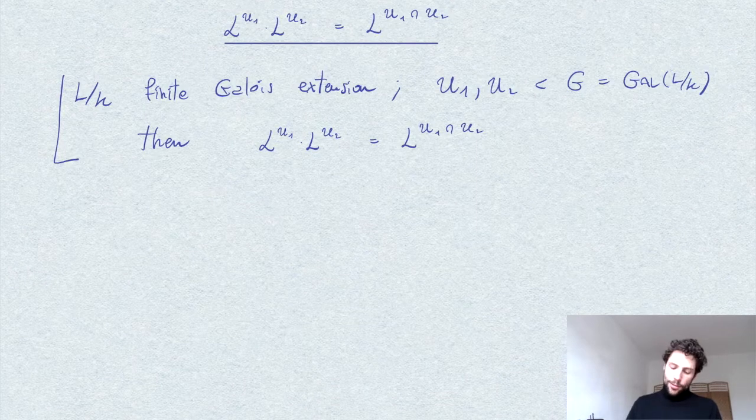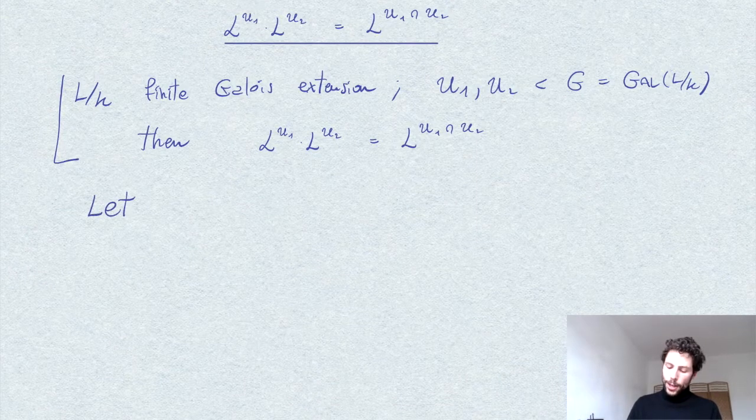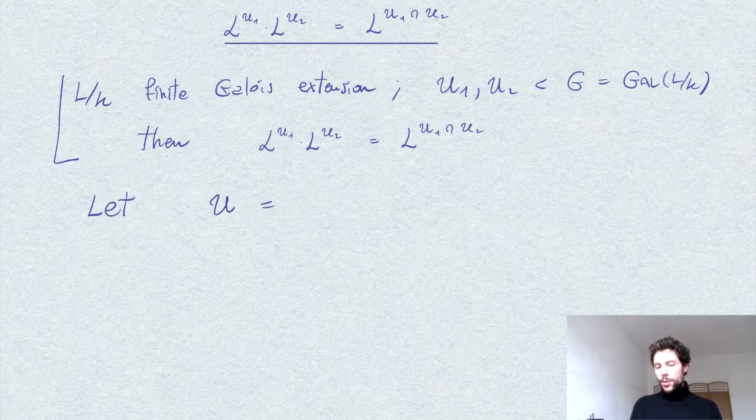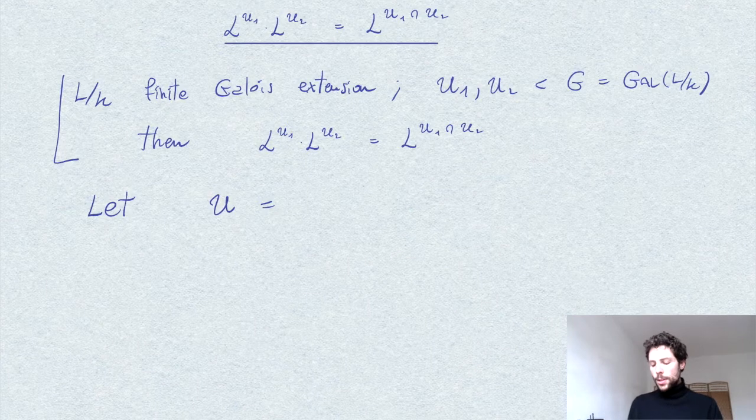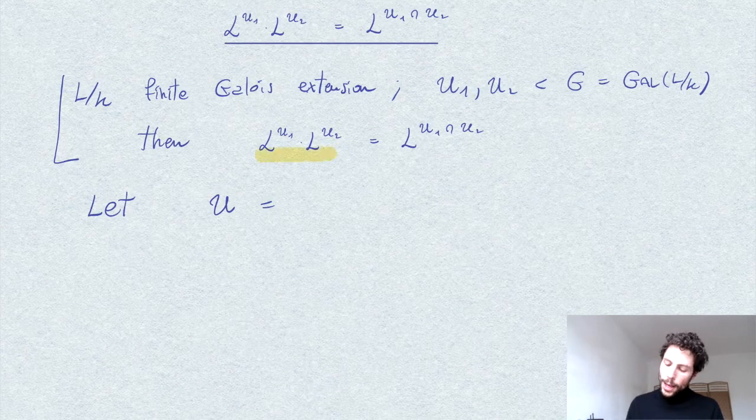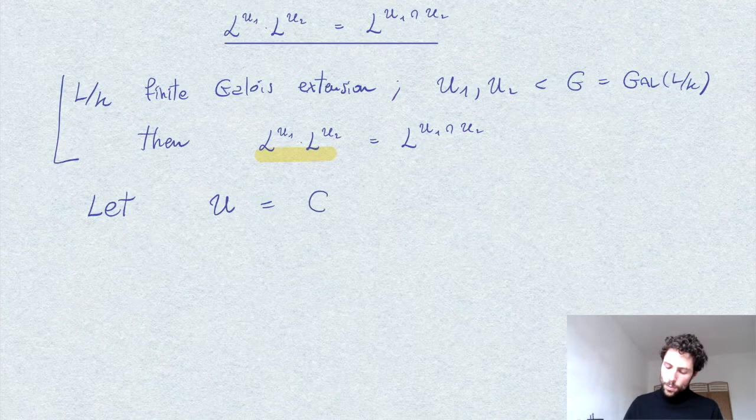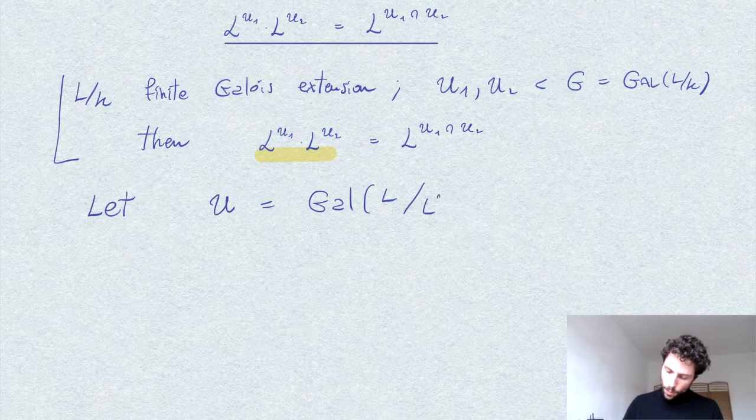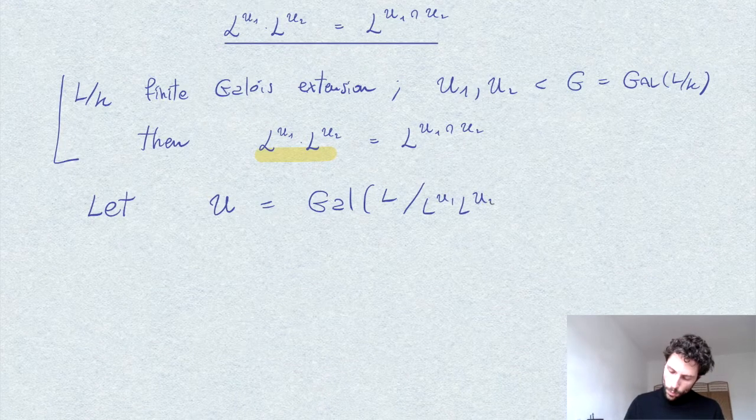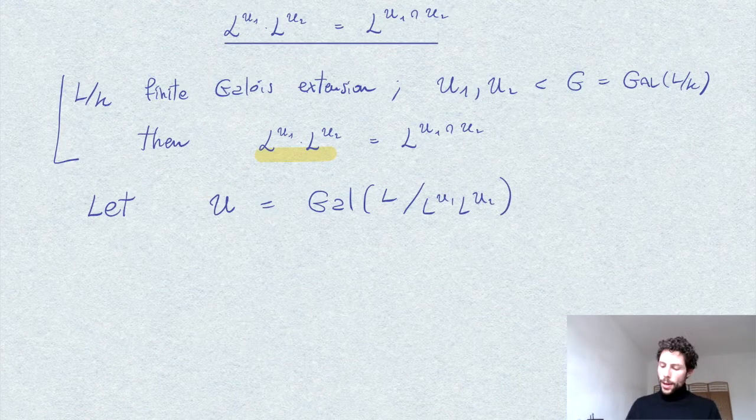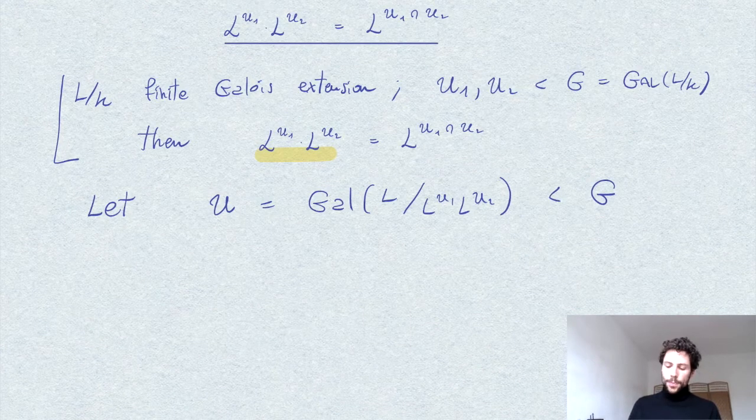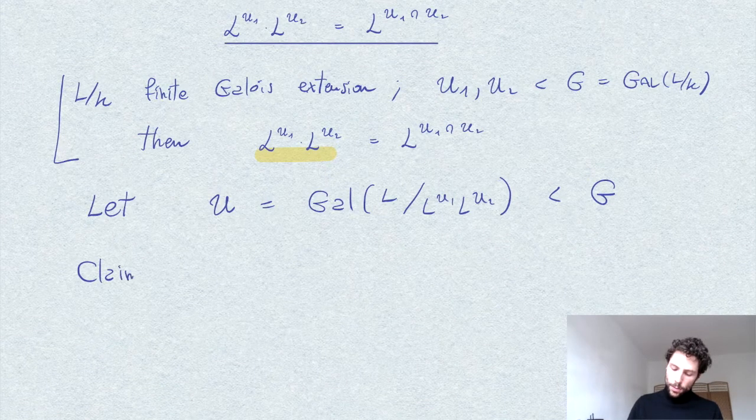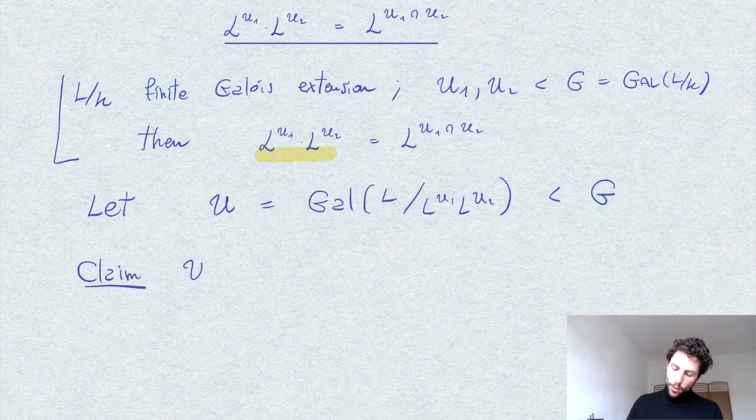Let's define, the strategy is very simple. We define the subgroup U which is the Galois group of automorphisms fixing the product, so the guy here on the left. This is obviously a subgroup of G, and we claim that this is precisely given by the intersection of U1 and U2.